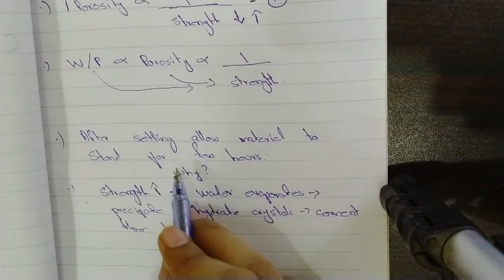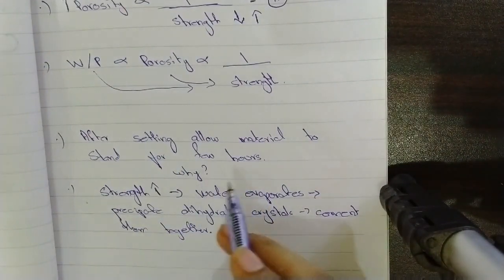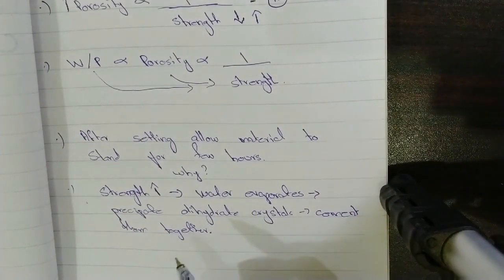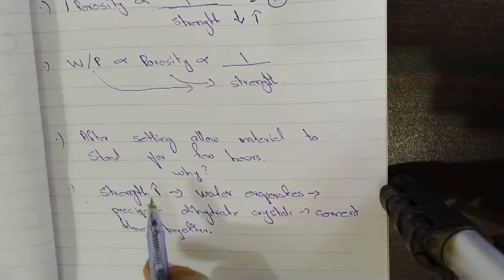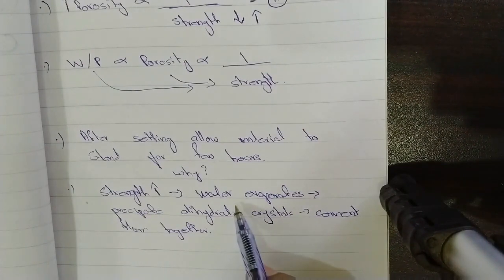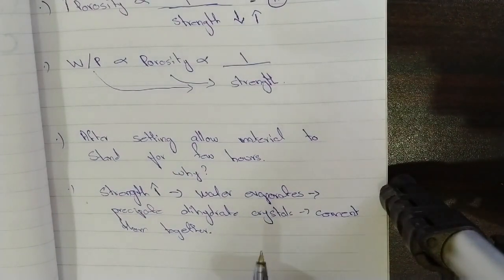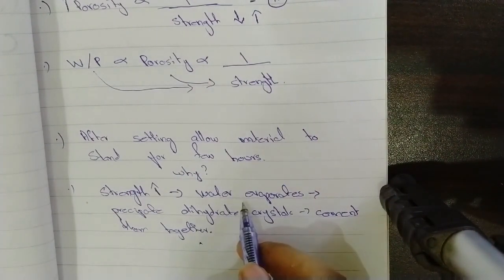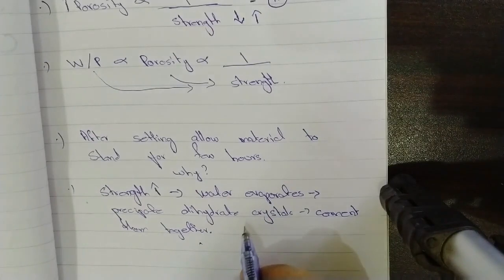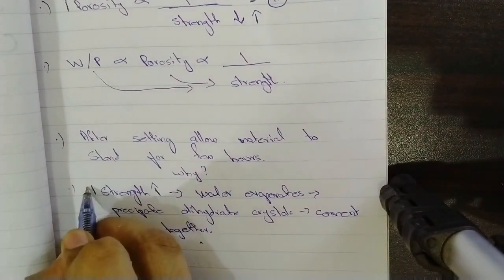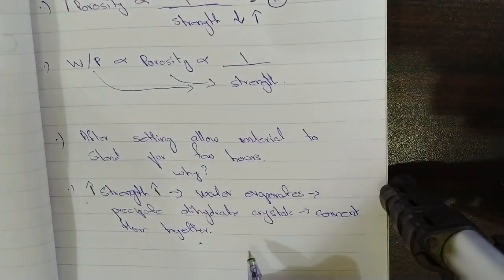After setting, we allow the material to strengthen for a few hours. Why? We strengthen the material for a few hours for an increase in strength. The material increases its strength through evaporation of water, which precipitates dihydrate crystals and cements the crystals together. As we strengthen the material for a few hours, water evaporates, dihydrate crystals precipitate and cement together — that is how strength increases over time.